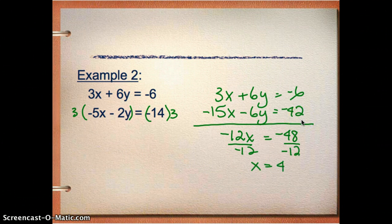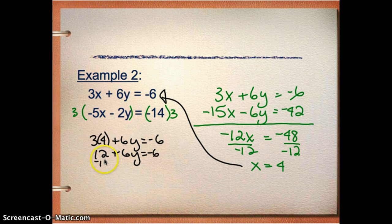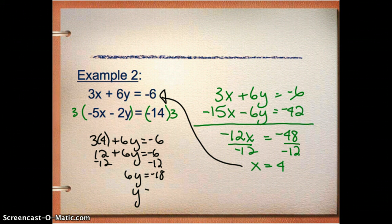And I'm going to go ahead in the first equation again, since they both look about the same difficulty, and plug that in. So I think that 3 times 4 plus 6y equals negative 6. And I'll solve that equation. So I've got 12 plus 6y equals negative 6. Subtract 12 from both sides. 6y equals negative 18.